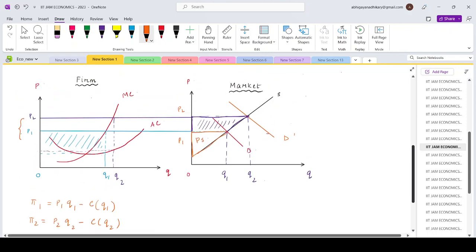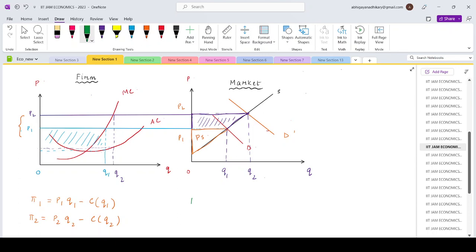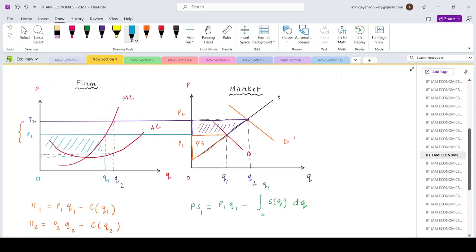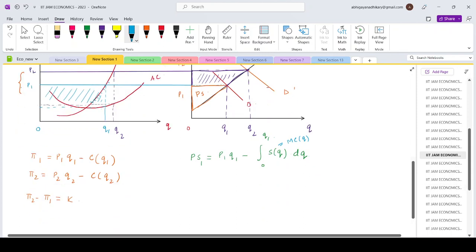If we look at this graph for the market demand and market supply curve for the firm, the producer surplus is basically, in the initial condition, PS1 would be the entire P1·Q1 minus integration from 0 to Q1 the supply which is a function of Q1. Now since the positively sloped part of the marginal cost curve for a perfectly competitive firm acts as a supply curve, this part is nothing but the marginal cost of Q. So that means PS1 is nothing but P1·Q1 minus C of Q1, which is exactly the same as π1.